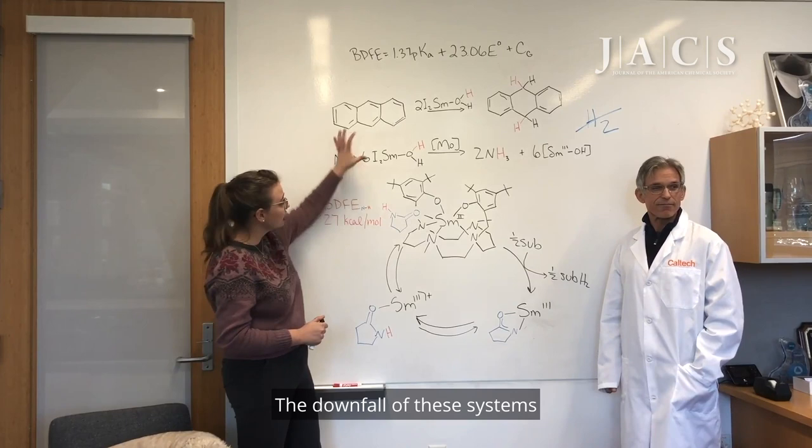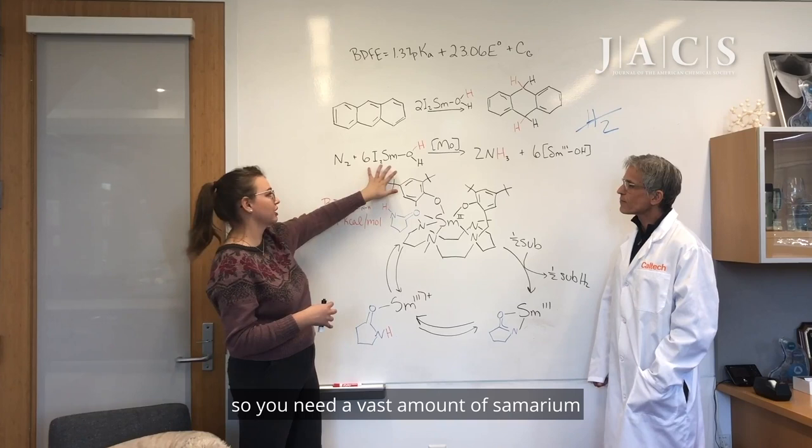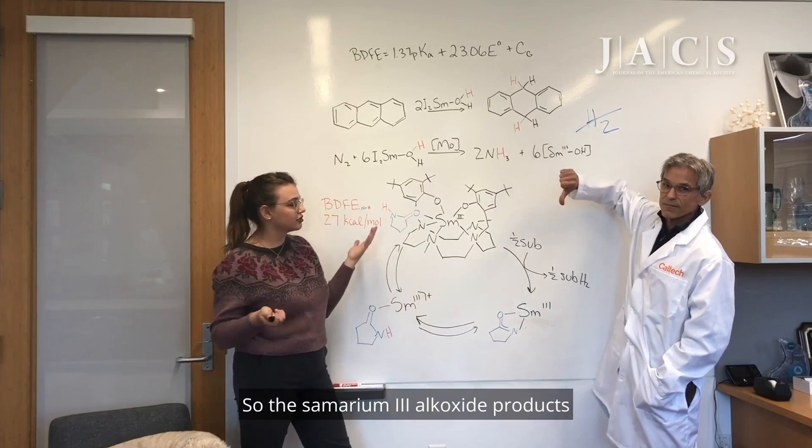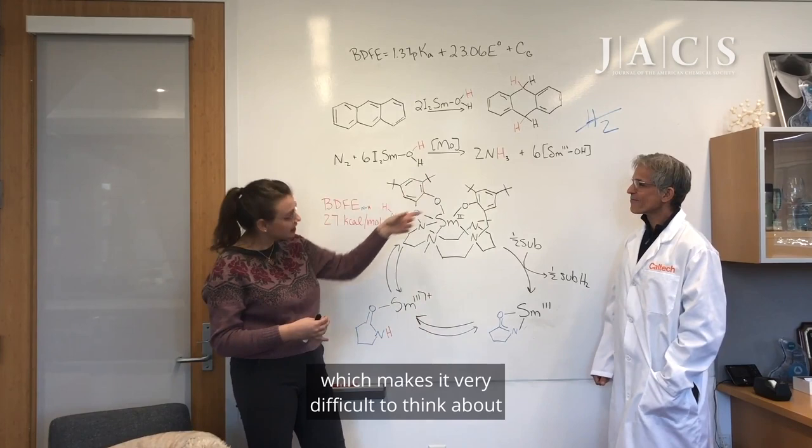The downfall of these systems is that they're stoichiometric in Samarium. So you need a massive amount of Samarium to, in this case, just reduce nitrogen. An obstacle to making these types of systems catalytic in Samarium is the products. The Samarium-3 alkoxide products are often insoluble and even oligomeric, which makes it very difficult to think about turning them back over.